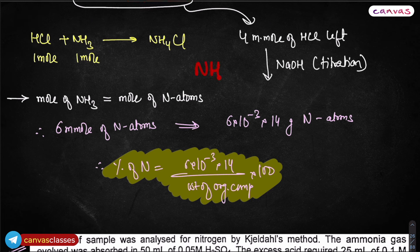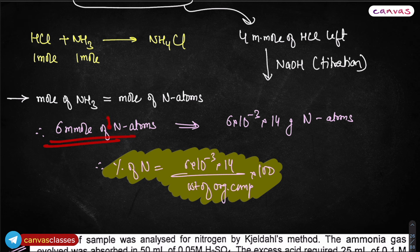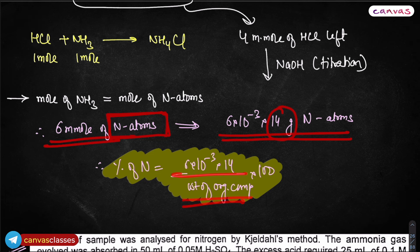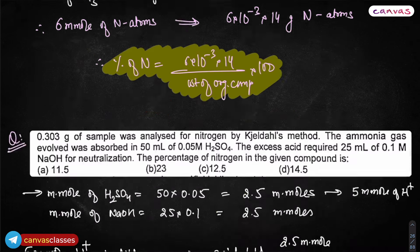So that is how we find the number of moles of ammonia. Since one mole of NH₃ requires one mole of nitrogen atoms, the moles of ammonia equal the moles of nitrogen atoms. Multiply by 14 to get the weight of nitrogen, then divide by the weight of the organic compound and multiply by 100 to get the percentage of nitrogen.